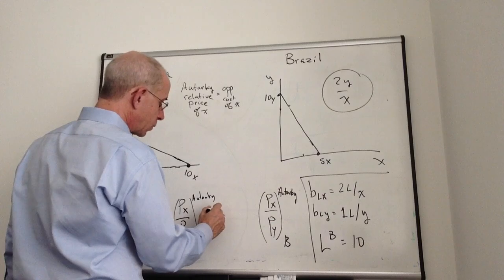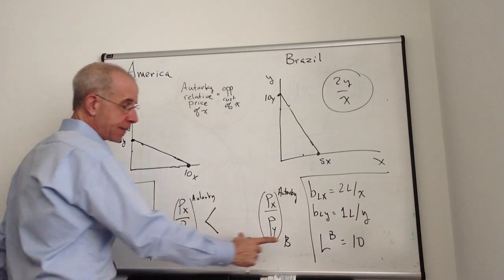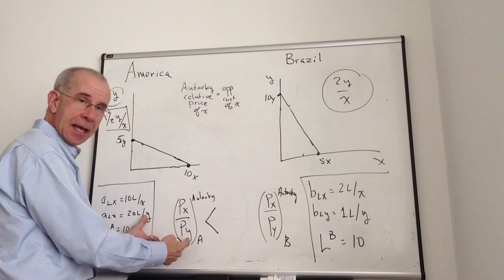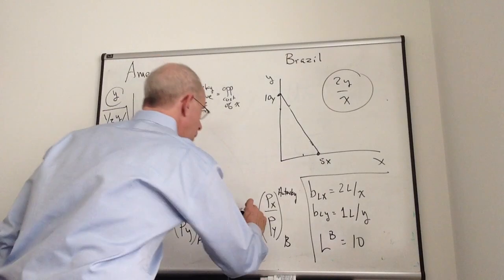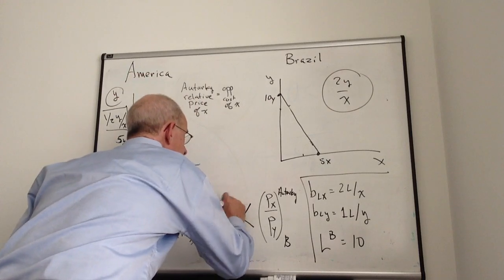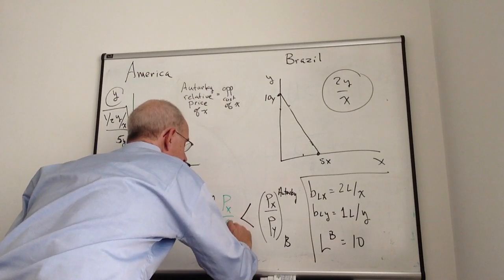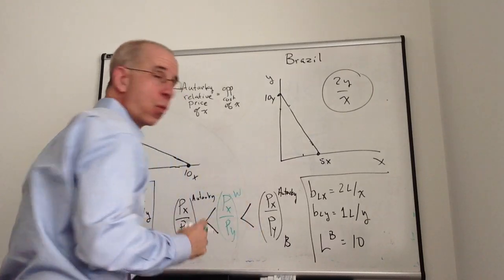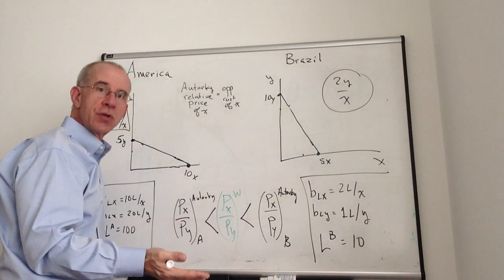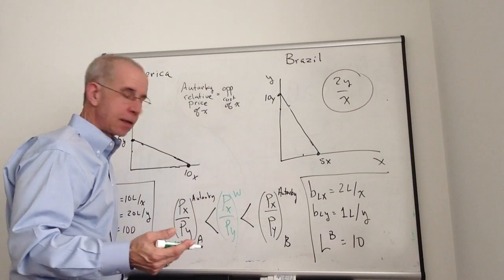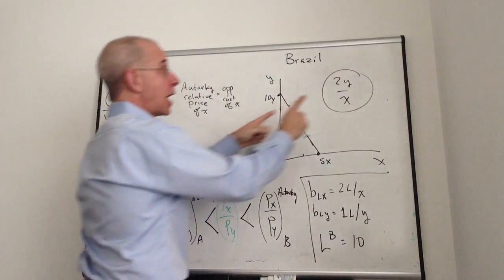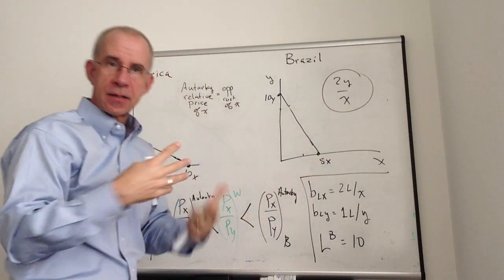In this particular instance, the relative price of X in country A is less than the relative price of X in country B. In other words, A has the comparative advantage in X. So a basic result in trade is that if the world price is in between these two, there will be mutually beneficial trade. In this case, something in between one-half Y per X and two Y per X would give both sides an incentive to trade with each other.